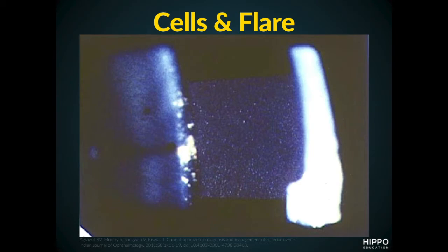That smoky haze is the flare portion — flare is actually an increased protein or exudation that we see within the anterior chamber. Sometimes on the physical exam, we can also see the presence of a hypopion, which is an accumulation of white blood cells at the inferior portion of the anterior chamber.